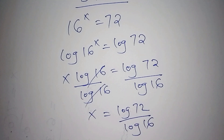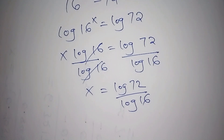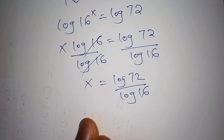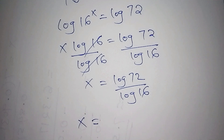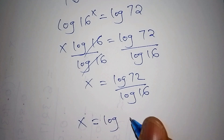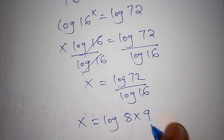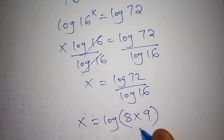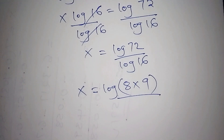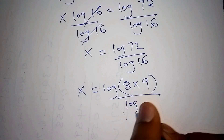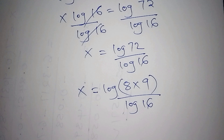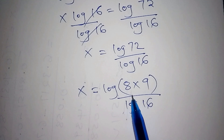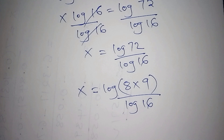Our answer does not stop there — we still have to proceed. The log of 72 can also be written as the log of 8 multiplied by 9, all over the log of 16. Our next step is to express 8, 9, and 16 as index numbers.